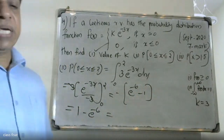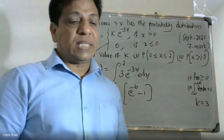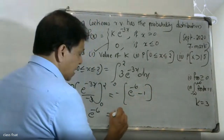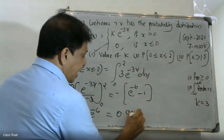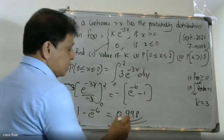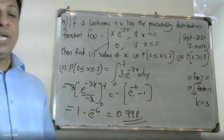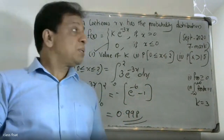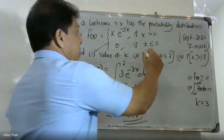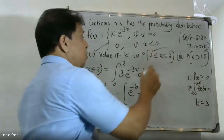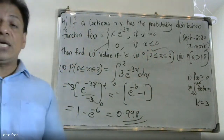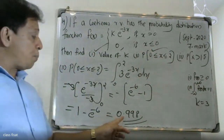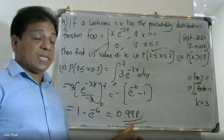The value of 1 − e^(−6) ≈ 0.998. Therefore, the probability of 0 ≤ x ≤ 2 is approximately 0.998.